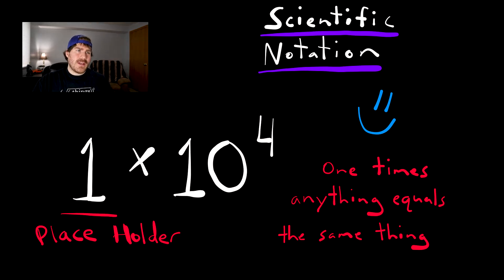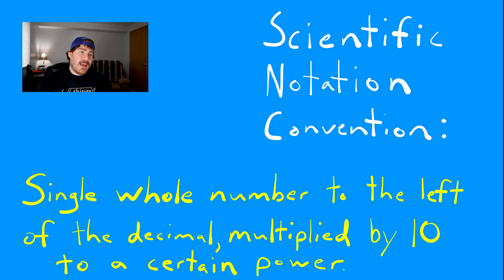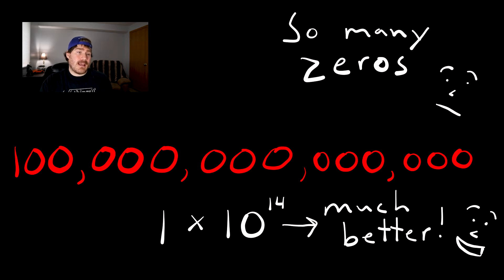You'll remember that 1 times anything always equals the same thing, so it's kind of a placeholder in this case. If you try to write the number 20,000 in scientific notation, this format becomes a little more obvious. Proper scientific notation format follows a convention of having a single digit multiplied by 10 to a certain power. In this way, we can express extremely large numbers using just a few digits. For instance, 100,000,000,000 can be expressed as 1 times 10 to the power of 14. We don't have to write all those zeros.